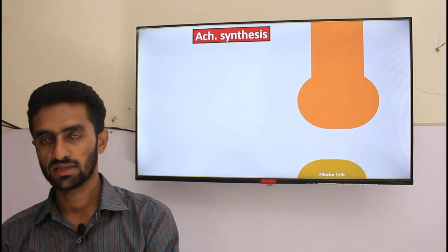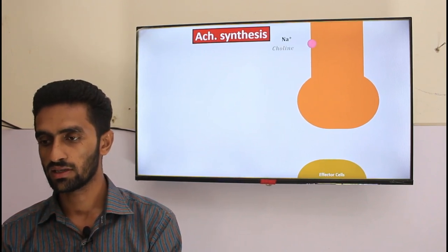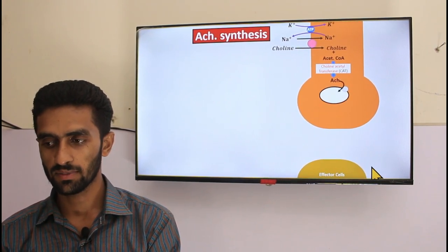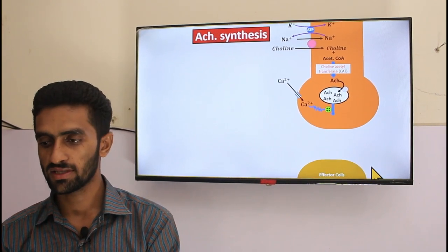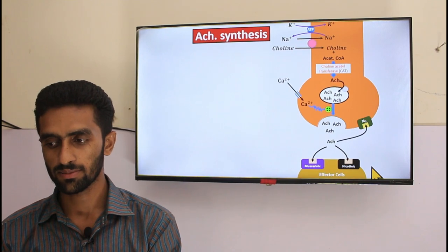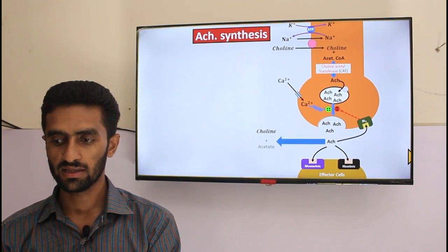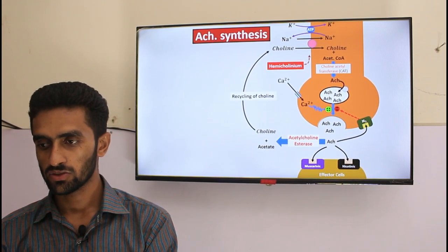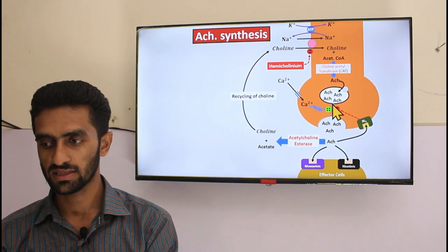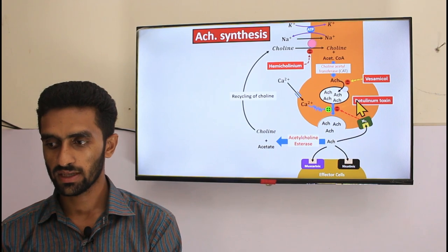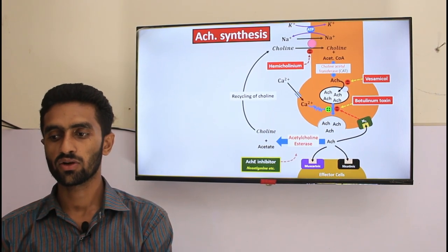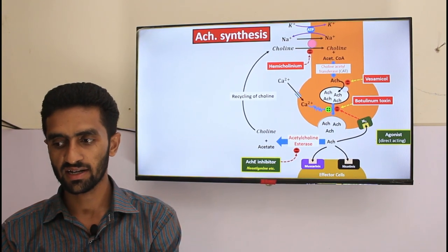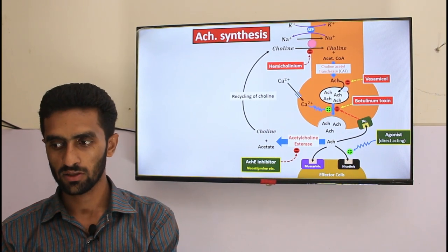Acetylcholine synthesis is important because agonists rely on it. Choline enters and binds to form acetylcholine, which is stored, then released from storage via vesicular transport. It binds with the receptor and provides feedback, then is destroyed by acetylcholinesterase and choline is taken back up. Hemicholinium inhibits choline uptake, vesamicol inhibits storage, and botulinum toxin blocks release.